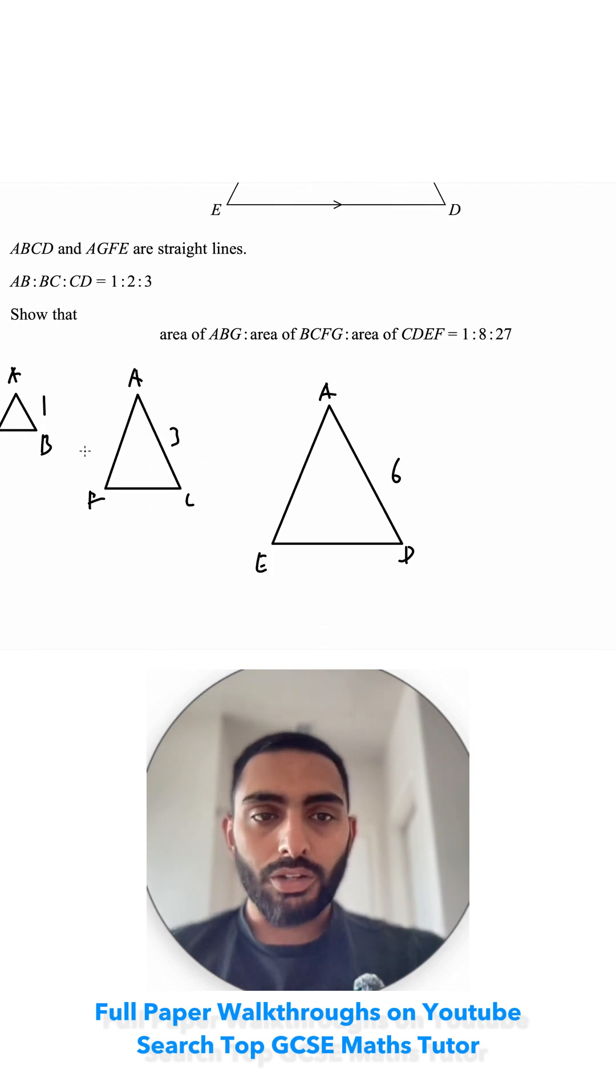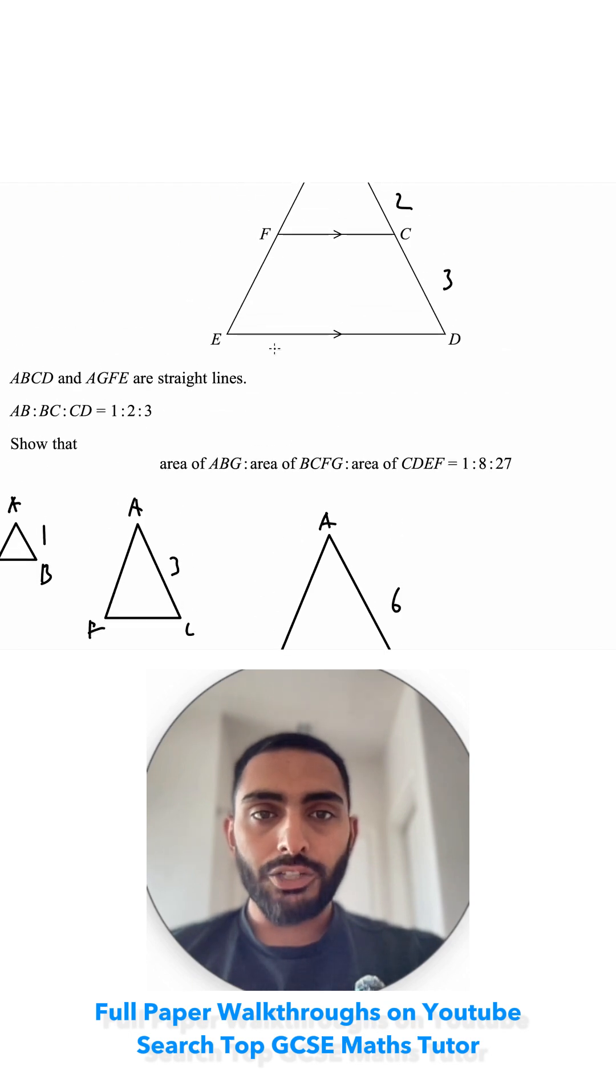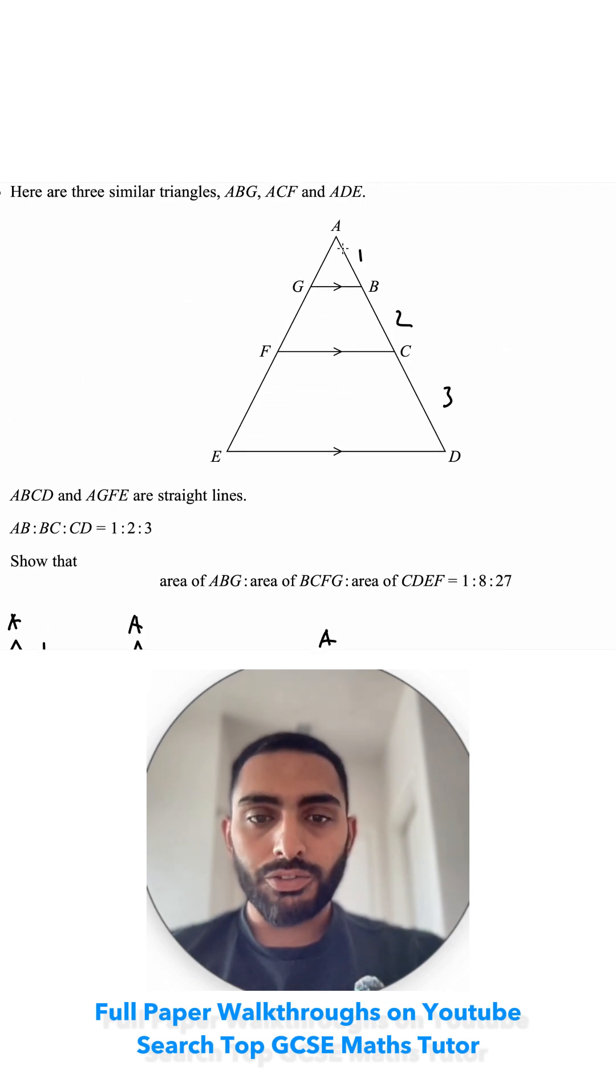Now that I've got all my lengths, I could use that to help me with the rest of the question. Show that the area of ABG, ABG is this triangle, to the area of BCFG, BCFG is this trapezium, to the area of CDEF, this trapezium is 1 to 8 to 27.